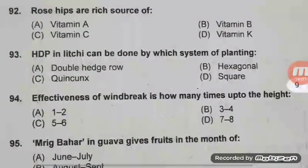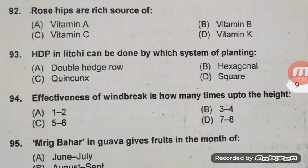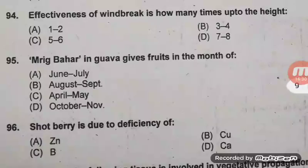Rose hips are a rich source of Vitamin C — C is the right answer; also repeated in JRF 2018. High density planting in lychee can be done by double hedge row system — A is the right answer. Question 94: Effectiveness of windbreak is how many times up to the height? Right answer B — three to four times.